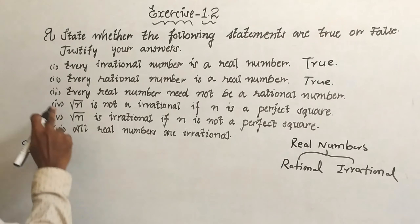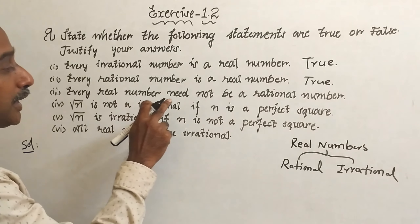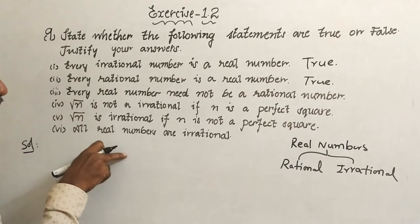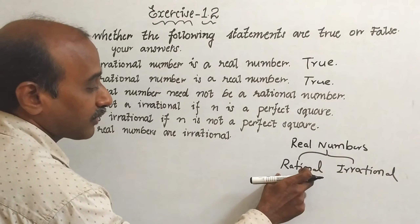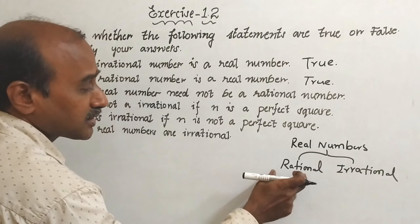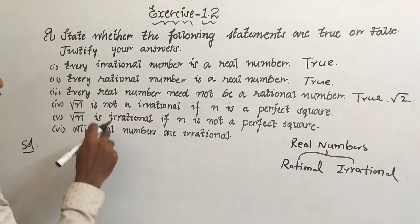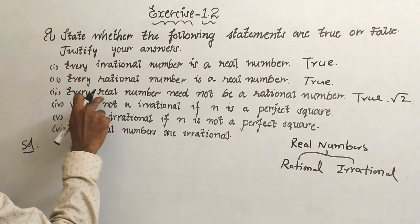Every rational number is a real number is also true because rational numbers are a part of the real numbers. Third one: every real number need not be a rational number. Real numbers consist of both rational and irrational, so you cannot say every real number is only rational. Therefore this is true.